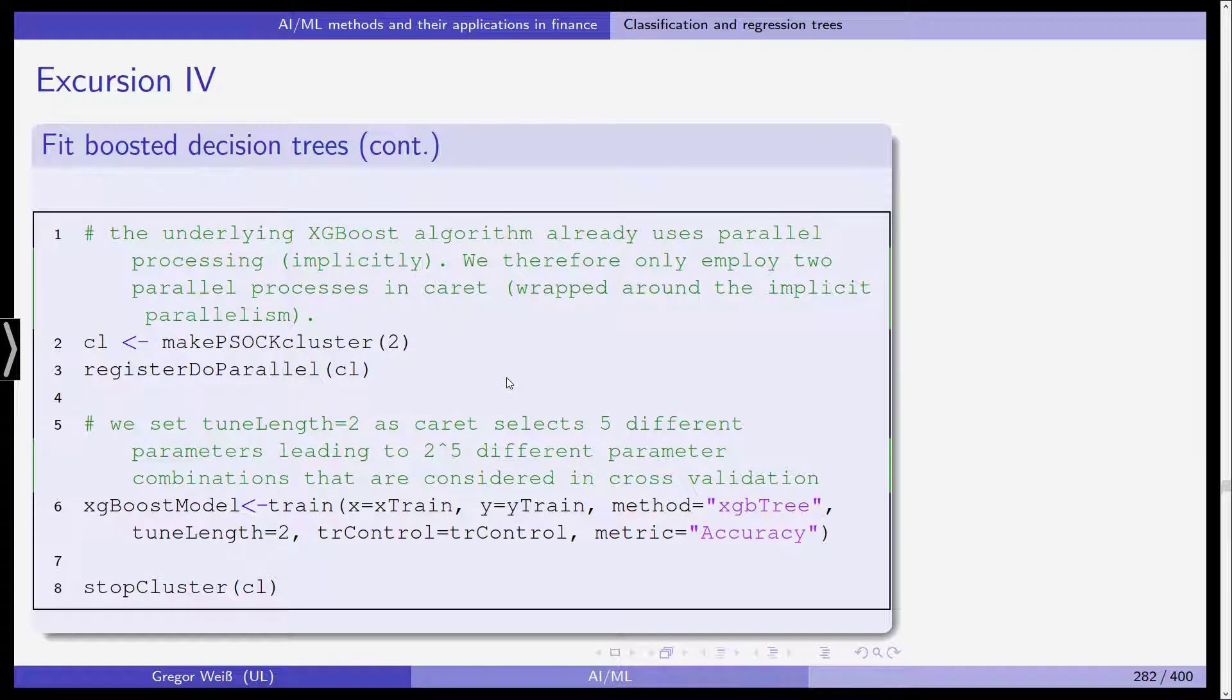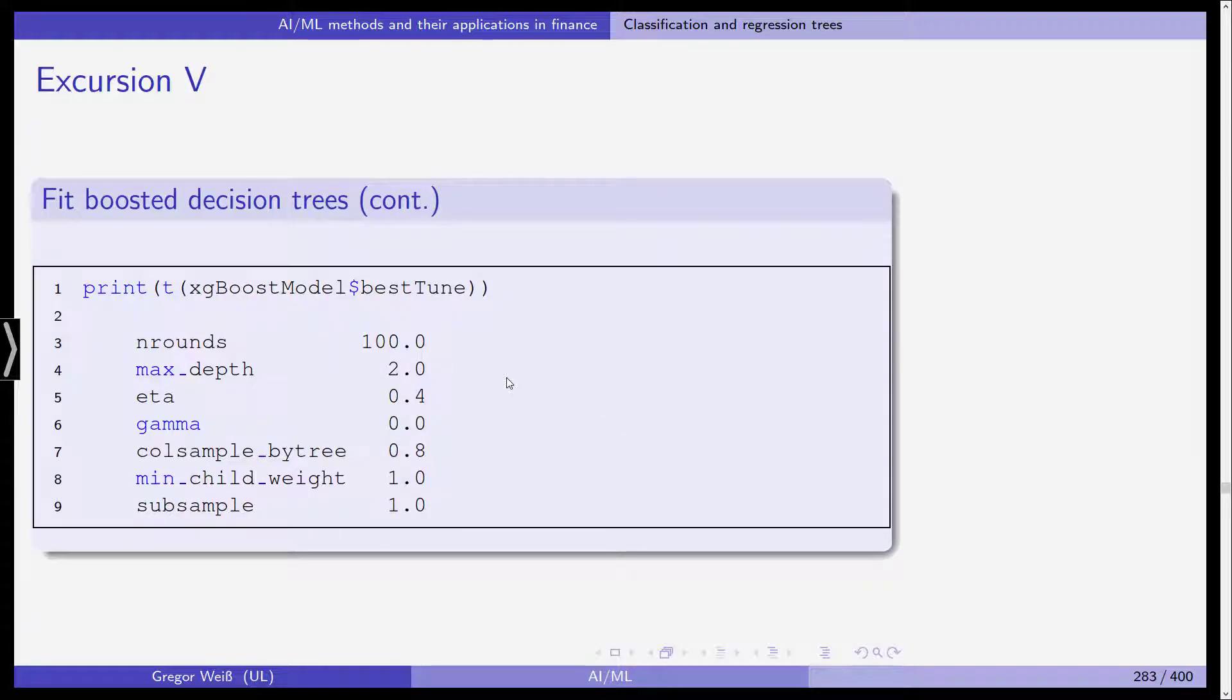So XGBoost model is our object. We train based on X-train and Y-train. The method is XGBtree. So it's a classification tree that is boosted via XGBoost. And the rest is standard. Train control, TR control, our options, cross-validation, five-fold and the metric used to select the best model is accuracy and then we stop the cluster.